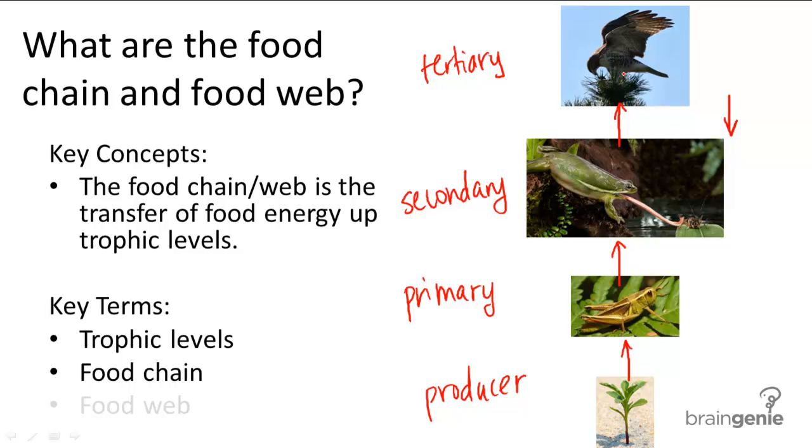So obviously, the food chain is very oversimplified. In nature, you won't find one producer and one consumer for each trophic level. Instead, you have many organisms on each level.